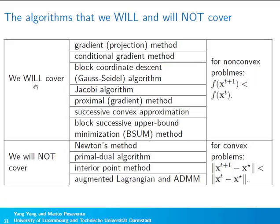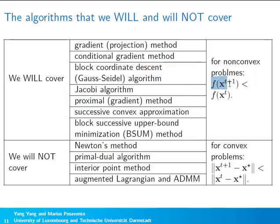In this tutorial we will cover several existing methods: the gradient method for unconstrained optimization, the gradient projection method for constrained optimization, the conditional gradient method, block coordinate descent, Jacobi algorithm, proximal algorithm, successive convex approximation, and the block successive upper bound minimization method. All of these methods were originally proposed for non-convex problems, and the main idea for showing convergence is to show that the function value at the new point is smaller than at the current point.